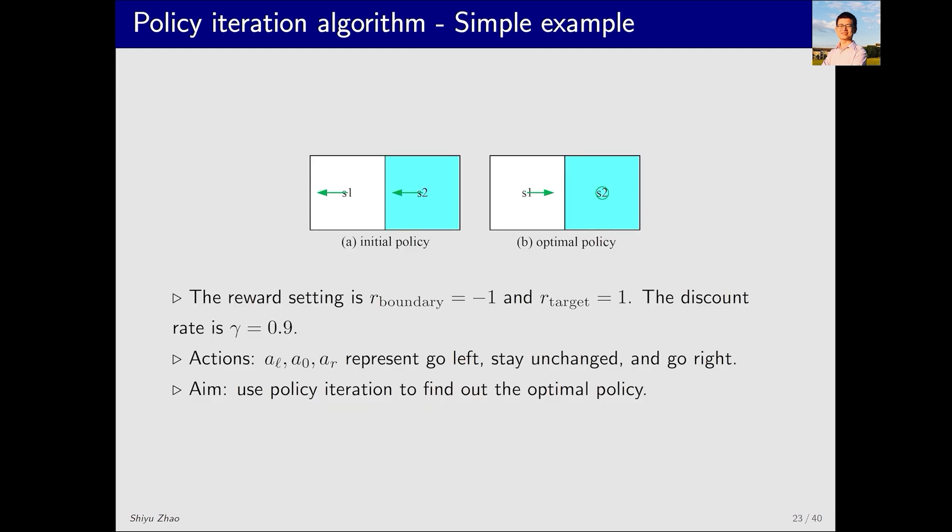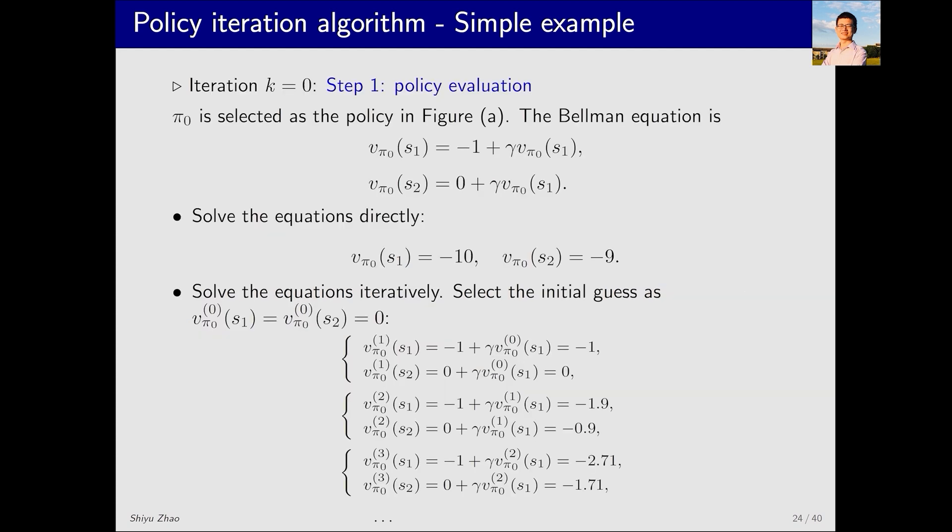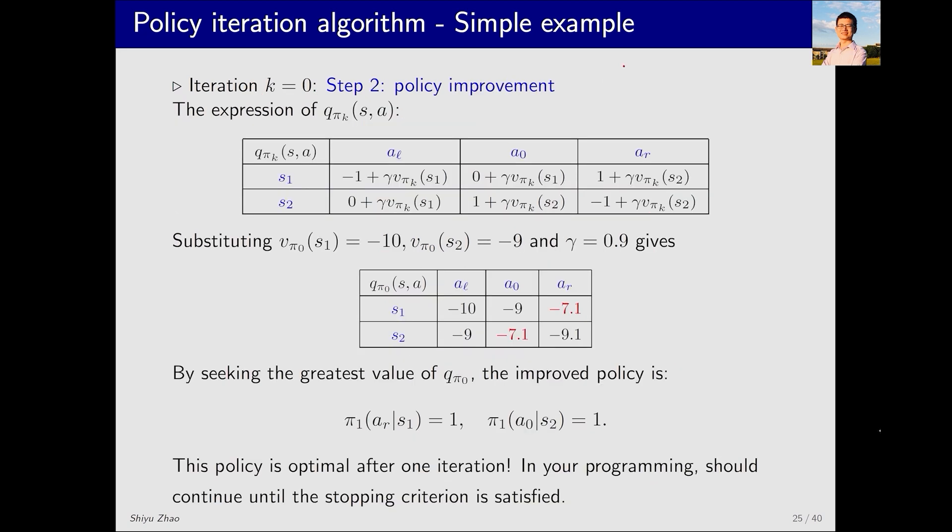Let's explore this algorithm further with a simple example to see how it works in practice. Here we have a grid world example with two cells and a target area on the right. The optimal policy is evident: move right when in the first cell and stay still when in the second cell. We aim to find this optimal policy using the policy iteration algorithm, starting from a random initial policy that suggests moving left in both cells. Let's see how it can find the optimal policy. This is the setup for the problem. Each cell has three actions: al move left, a0 stay still, and ar move right. When k equals zero, the first step is policy evaluation, essentially solving vπ0. How? We can solve the Bellman equation, which, due to the simplicity of this problem, can be done trivially. Alternatively, when it becomes more complex, we can use an iterative algorithm to solve it. I'll skip directly to having solved vπ0.